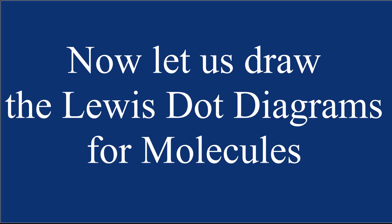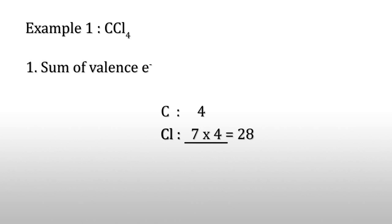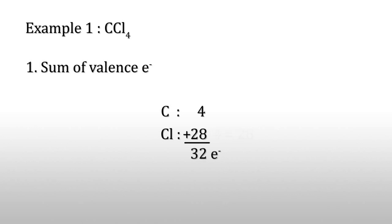Now let us draw Lewis dot diagrams for molecules. The first example is carbon tetrachloride. First, we have to find the sum of valence electrons. Carbon has four valence electrons and chlorine has seven valence electrons. There are four chlorine atoms, giving 28 electrons. Total: 32 electrons.